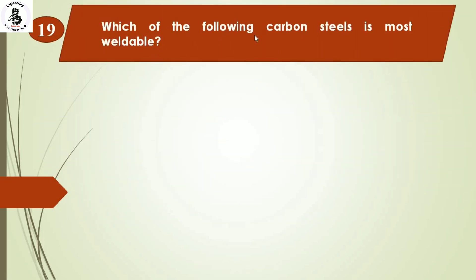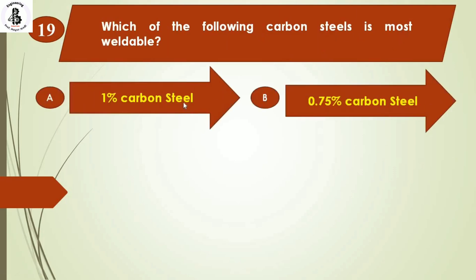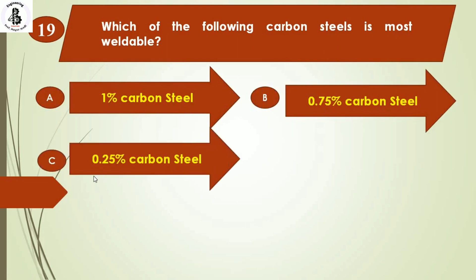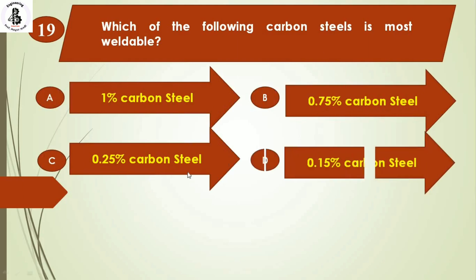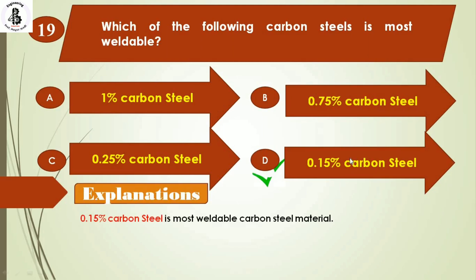Which of the following carbon steels is most weldable? Option A: 1% carbon. Option B: 0.75% carbon. Option C: 0.25% carbon steel. Option D: 0.15% carbon steel. From a practical standpoint, 0.15% carbon steel is the most weldable carbon steel. So the right answer is option D.